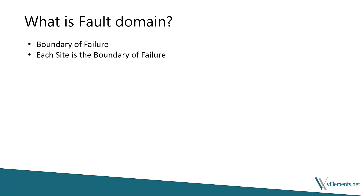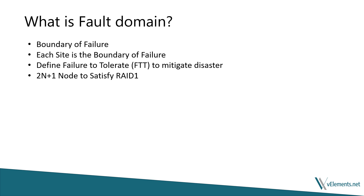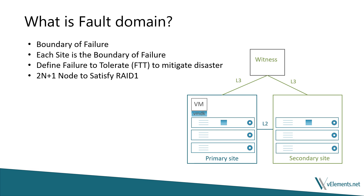When we want to mitigate failure, we need to define the failures to tolerate, which affects the placement of objects. We make sure the data components, or replicas of the data, are not going to end up in one single host or a single site. For RAID 1, we need at least 2N+1 nodes: one node for data, one for the replica, and a third node as a witness to satisfy quorum requirements in split-brain scenarios. When configuring explicit fault domains at the data center level, the concern is not just the number of nodes, but to have two active-active data sites and one witness site to protect VMs across data centers.